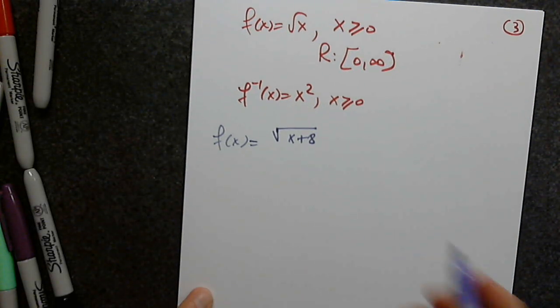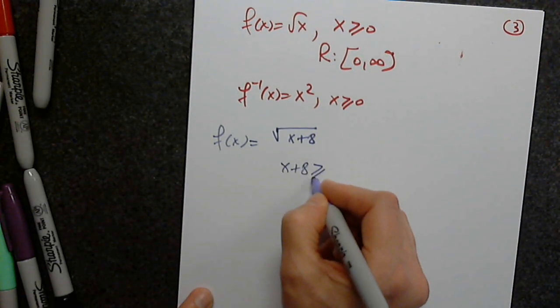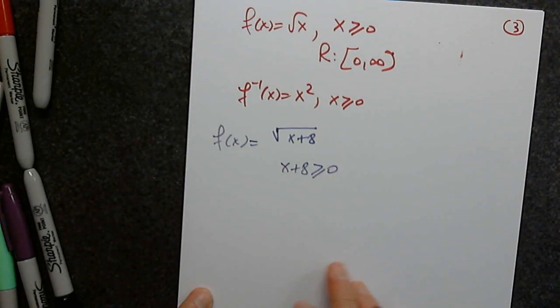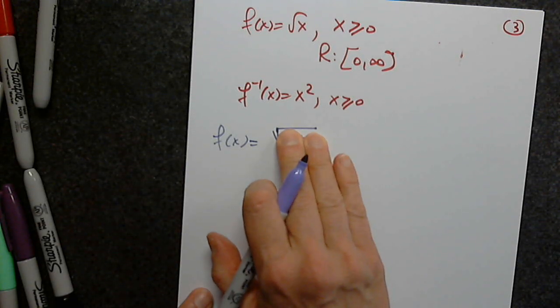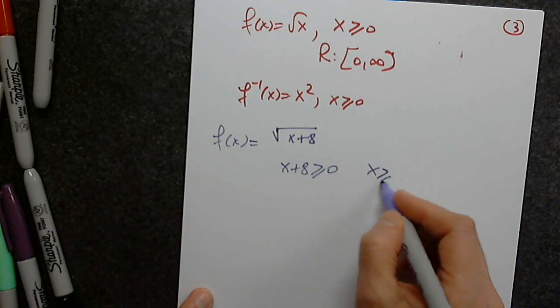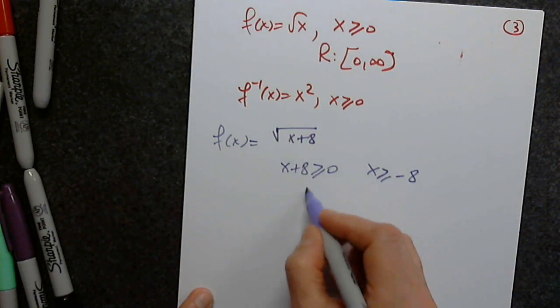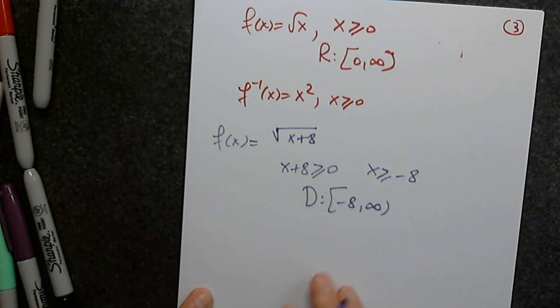Exactly what we discussed: for f(x) = √(x + 8), x + 8 must be greater than or equal to 0, otherwise I will not be able to take the square root. So x ≥ -8, giving domain [-8, ∞).